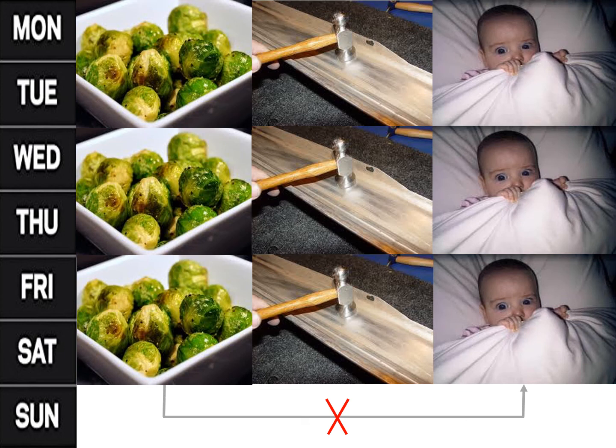How can we explain these findings? Why do we learn the association between sprouts and nausea more rapidly than we learn the association between sprouts and fear?